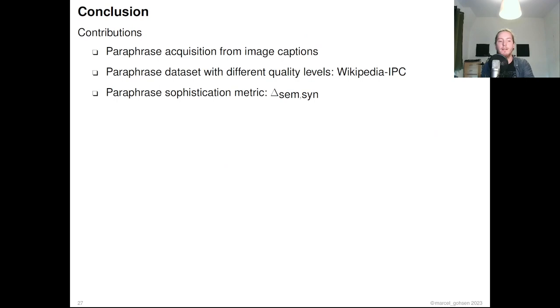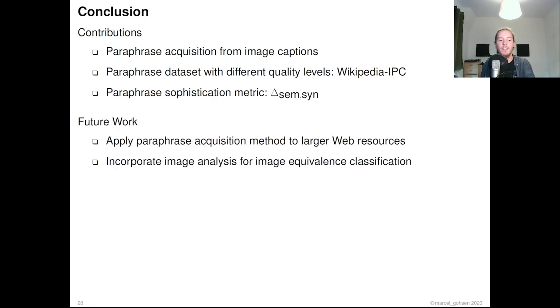To sum it up, we proposed a new distantly supervised paraphrase acquisition approach, with which we compiled a new paraphrase dataset with three different quality levels. We suggest a new automatic metric for paraphrase sophistication, the delta-sam-syn metric. In the future, we want to apply this paraphrase acquisition pipeline on larger web resources than Wikipedia and incorporate image analysis as an additional image equivalence criterion to mine even more paraphrases from image captions.